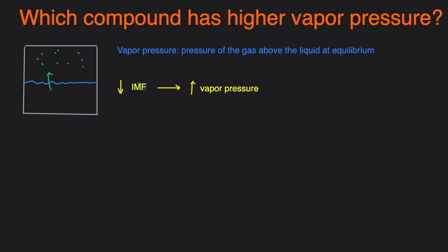We do that by looking at the strength of intermolecular forces. The compound with the weaker intermolecular force is going to have a higher vapor pressure. It's because if the liquid molecules are weakly attracted to each other and not holding on to each other as tightly, then more and more of the liquid can escape, giving you more gas and therefore a higher vapor pressure. Now let's take a look at the different types of intermolecular forces and their ranking in terms of strength.